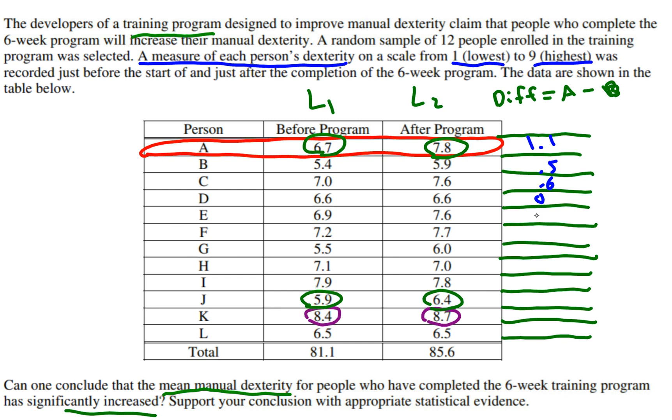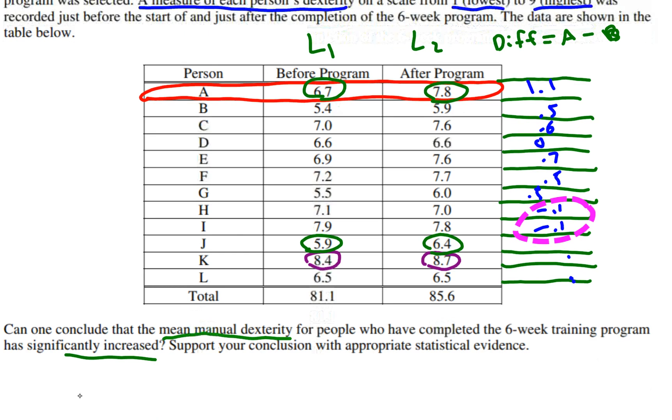The person did not improve: 0.7, 0.5, another 0.5 here, negative 0.1, negative 0.1, 0.5 and a few more numbers. What's interesting to see is that some of these numbers are negative, meaning these people actually went down in performance after going through the training program. This program wasn't effective for them.